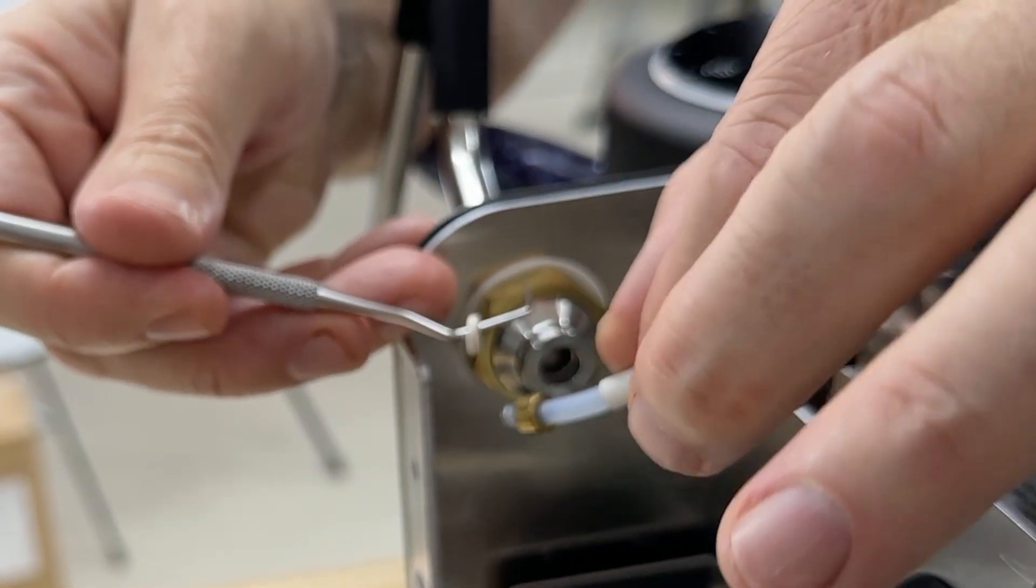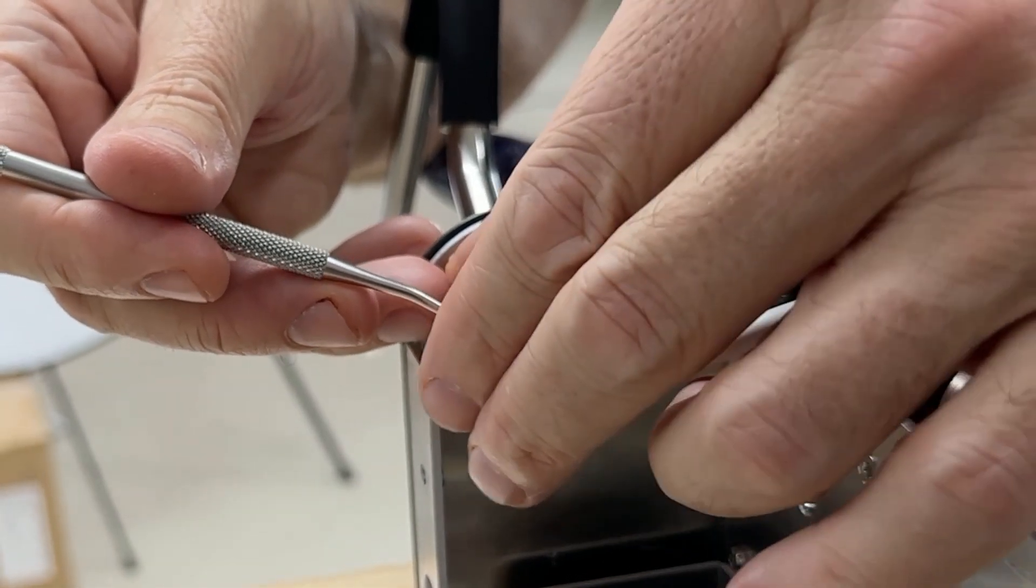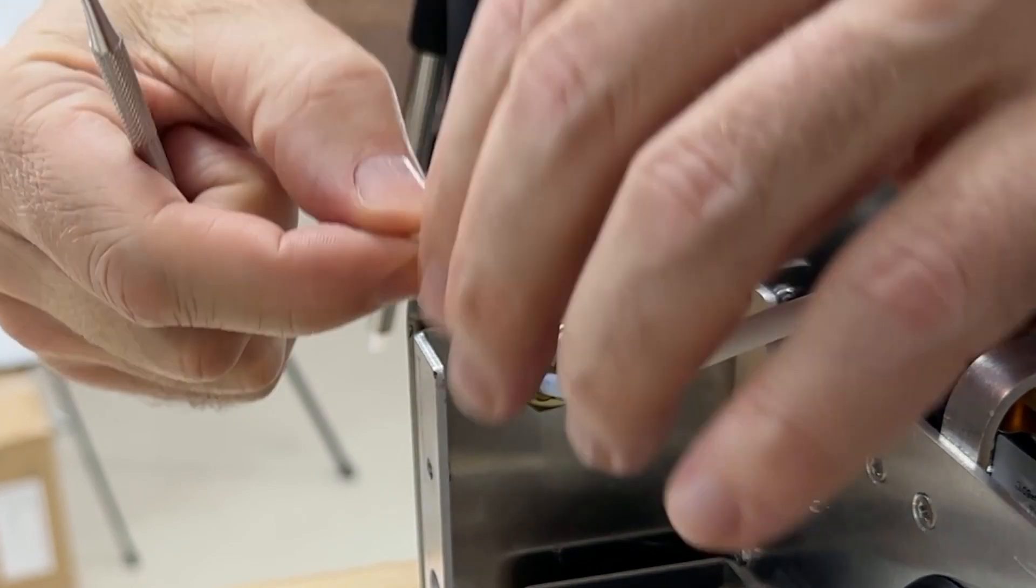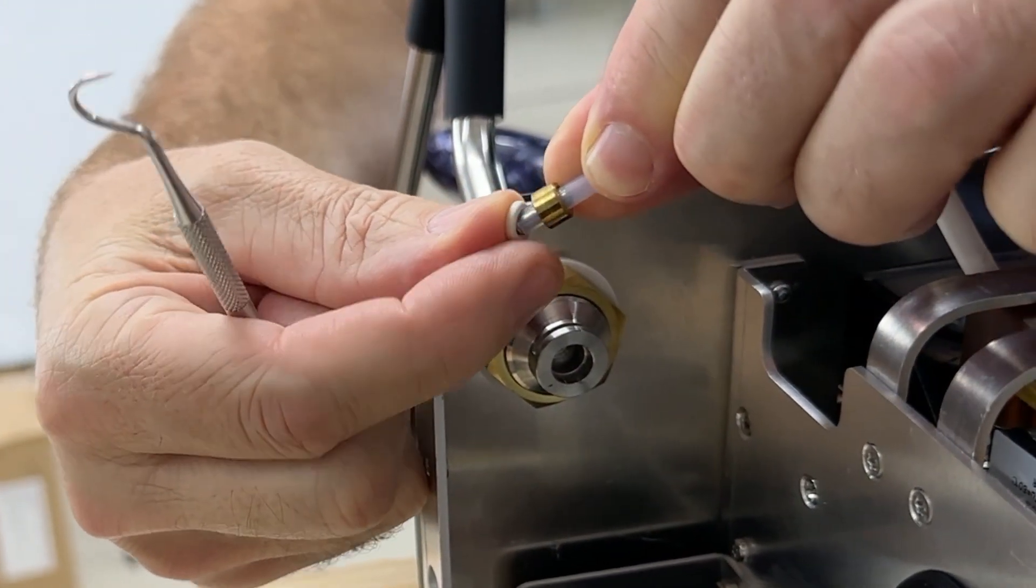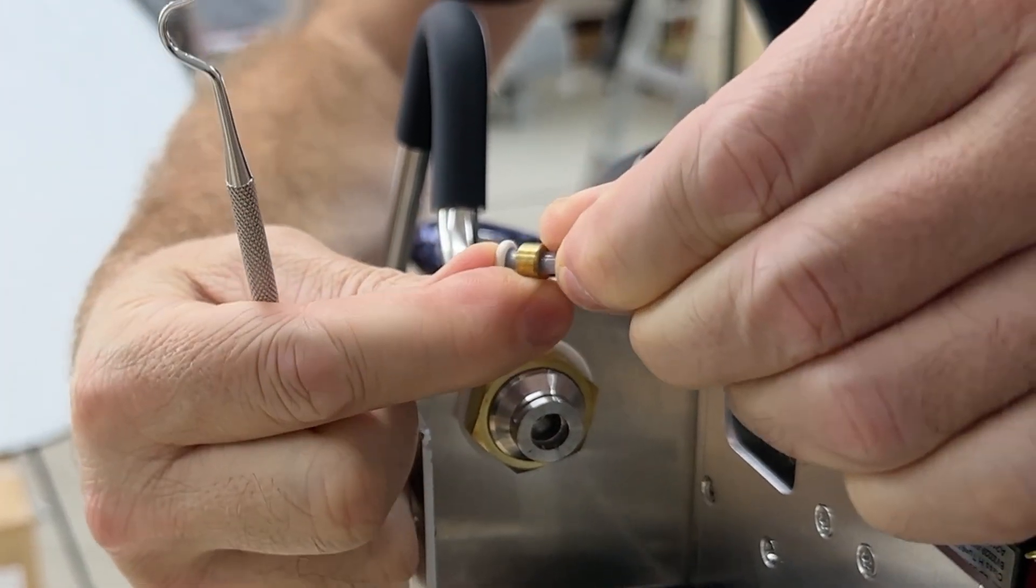So if I want to change the tube or repair it or clean it in some way, I take the o-ring out, clean everything, and then I put the o-ring back on like so.